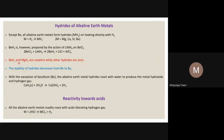Beryllium and magnesium hydrides are covalent because these are very small cations with +2 charge. According to Fajan's rules, polarization of the electron cloud of hydrogen will occur. The electron cloud will sit between beryllium and hydrogen, and the sharing of that electron density between beryllium and hydrogen — or magnesium and hydrogen — gives these compounds covalent character.